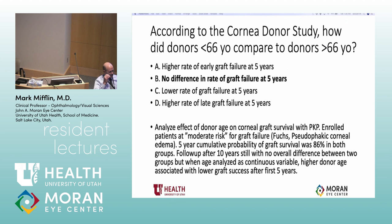The cornea donor study was a big multicenter trial — I was actually one of the investigators. It compared donor tissue from younger and older donors, and the correct answer was there's no difference in graft failure. There was about an 86% survival rate of transplants. This was a very important study to validate the use of older donor tissue, which is obviously a higher supply because older people pass away.